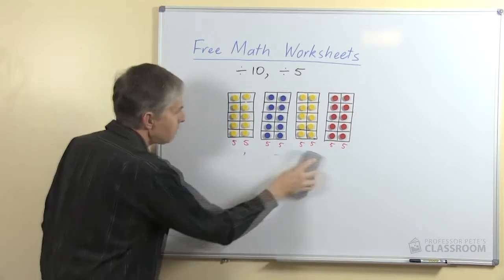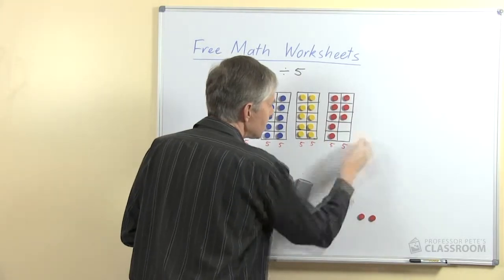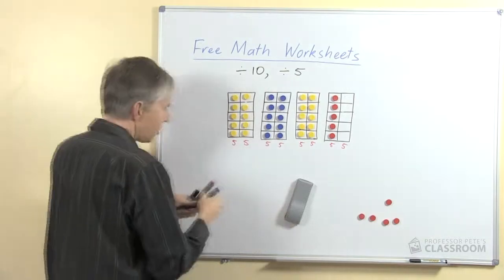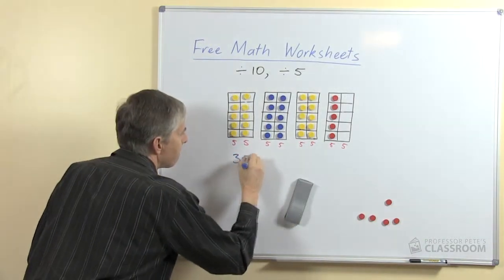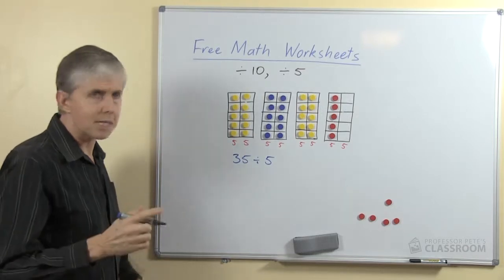Alright, so far so good. What if we're not doing a multiple of 10? So if I take 5 of these away, we now have 35 divided by 5. Could we do the same thing? Well, it turns out yes we can.